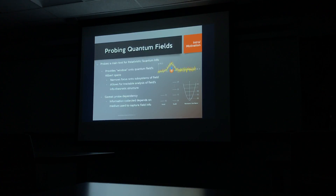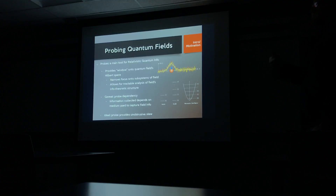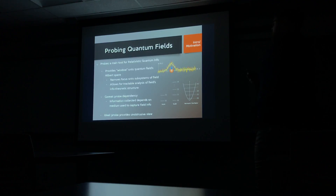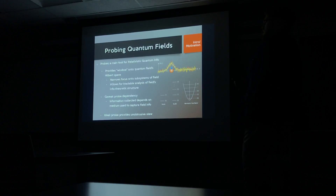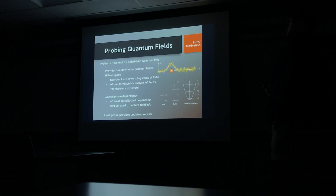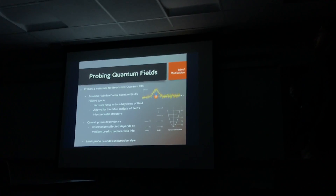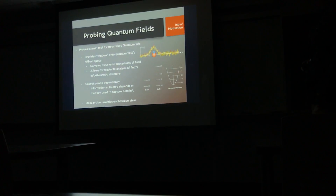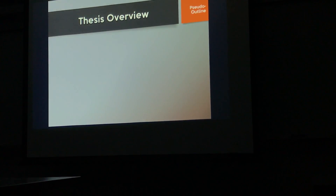By focusing on certain subspaces that we couple to with probes — using qubits or oscillators — we're more flexible in our analysis of the information-theoretic structure of the fields, and we can do more powerful things than usual in RQI.